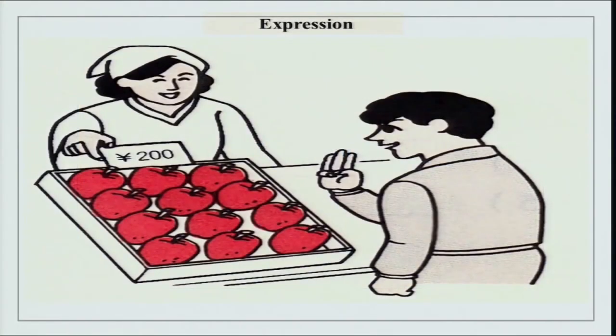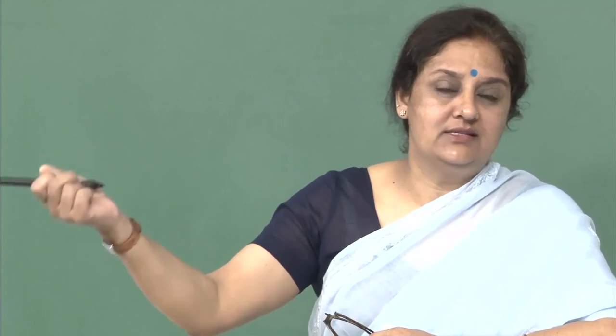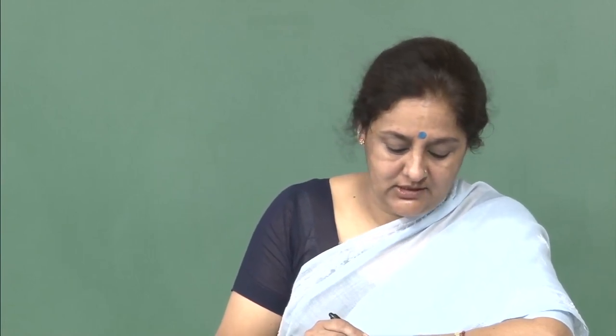Gomen kudasai — when you go to someone's house, go to a shop, or enter a room, you would say excuse me or knock and inquire: is someone there? Gomen kudasai is said with a rising intonation always. When you go to someone's house you are looking for someone — you just knock and say gomen kudasai. When you enter a shop and no one is around, you say gomen kudasai to ask if someone is around. Only after you get a response from inside do you enter.